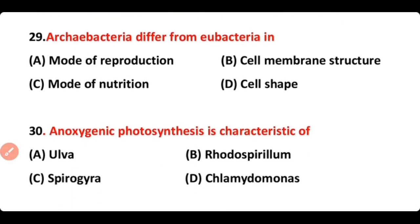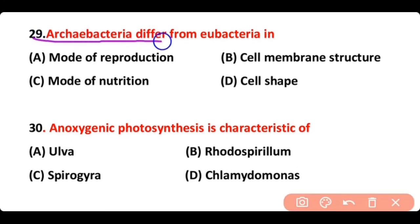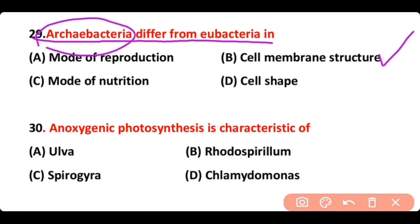Question 29. Archaeobacteria differ from eubacteria in — mode of reproduction, cell membrane structure, mode of nutrition, or cell shape? The correct answer is option B — the cell membrane structure of archaeobacteria is different from that of eubacteria in composition.